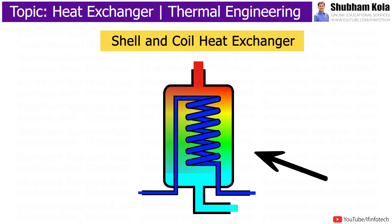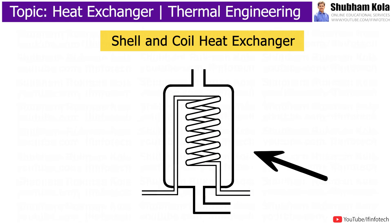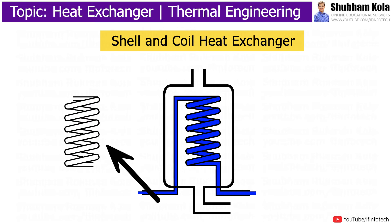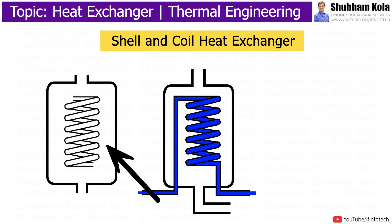Shell and coil type heat exchangers consist of one or more coils enclosed in a shell. The coil can be arranged vertically as well as horizontally. This coil inside the shell is allowed to expand or contract with temperature rise or fall.